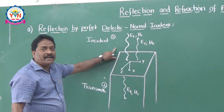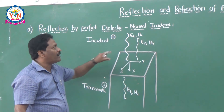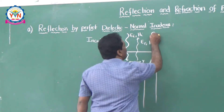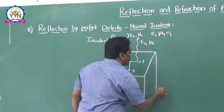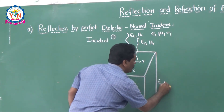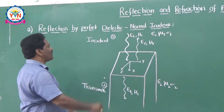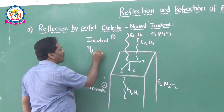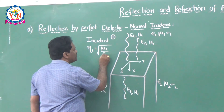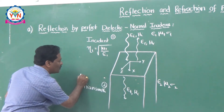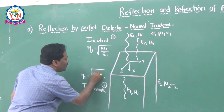A medium is always characterized by three parameters: epsilon, mu, and sigma. Medium one has epsilon 1, mu 1, and sigma 1, and medium two has epsilon 2, mu 2, and sigma 2. The intrinsic impedance eta 1 is equal to the square root of mu 1 divided by epsilon 1, and eta 2 is equal to the square root of mu 2 divided by epsilon 2.